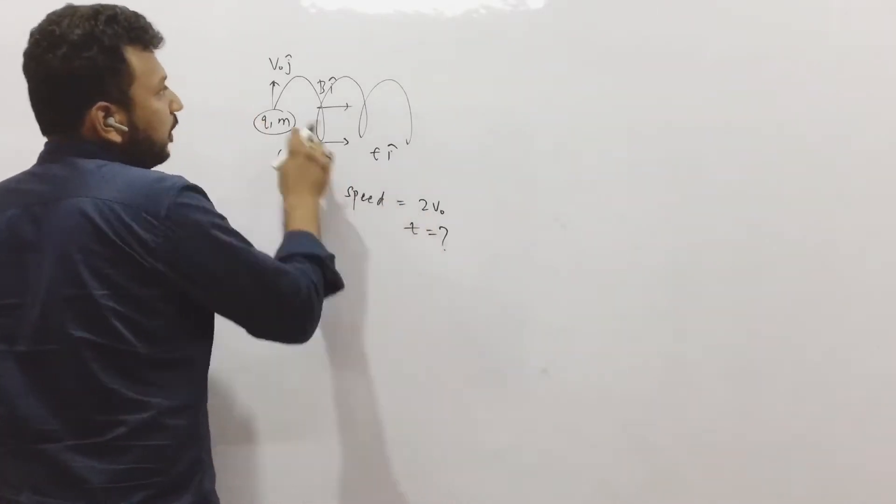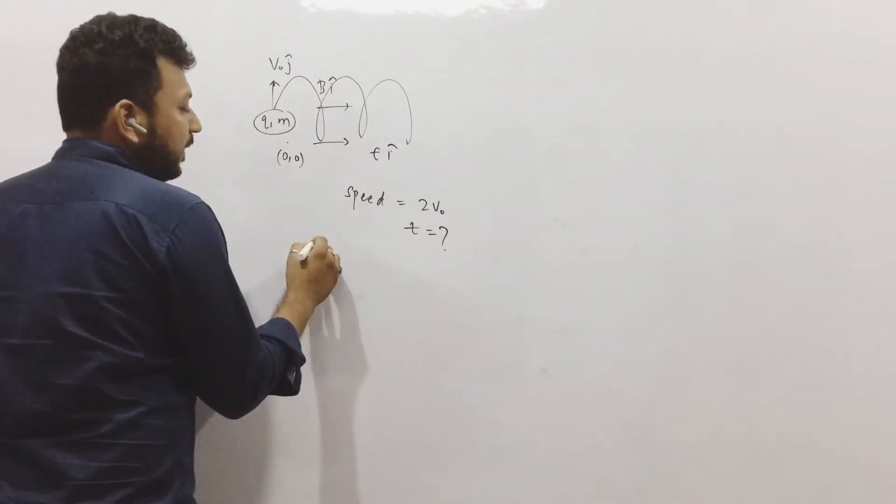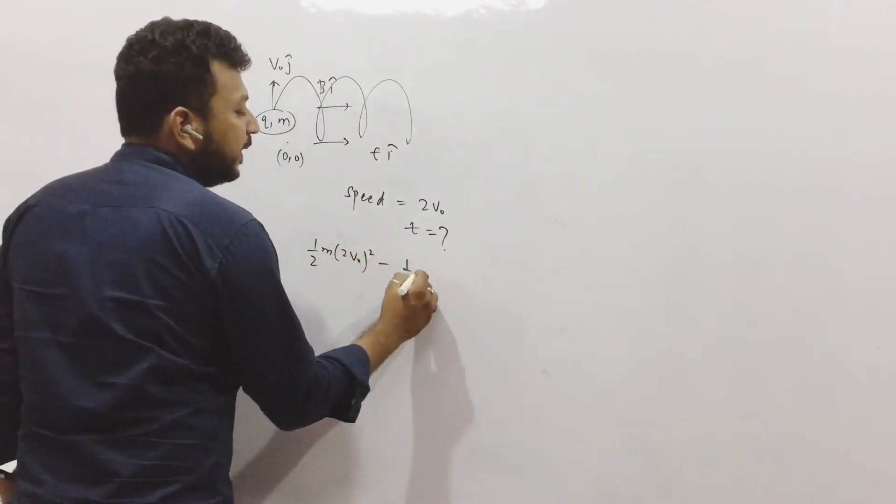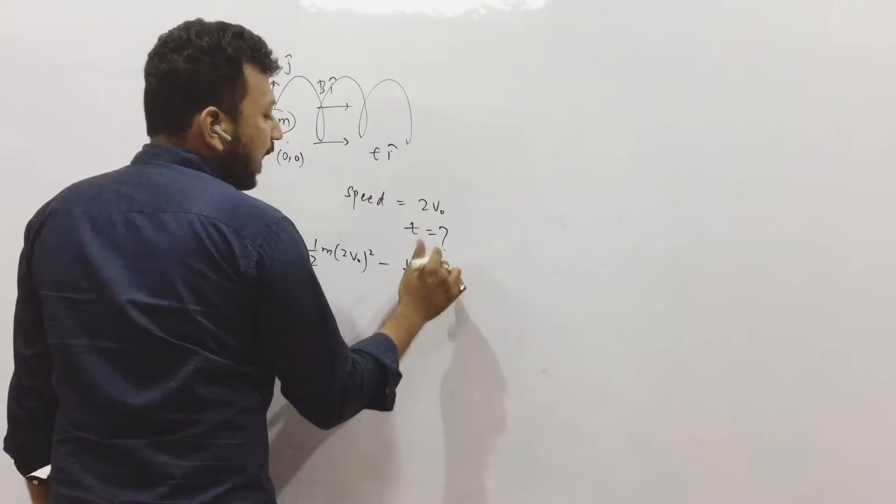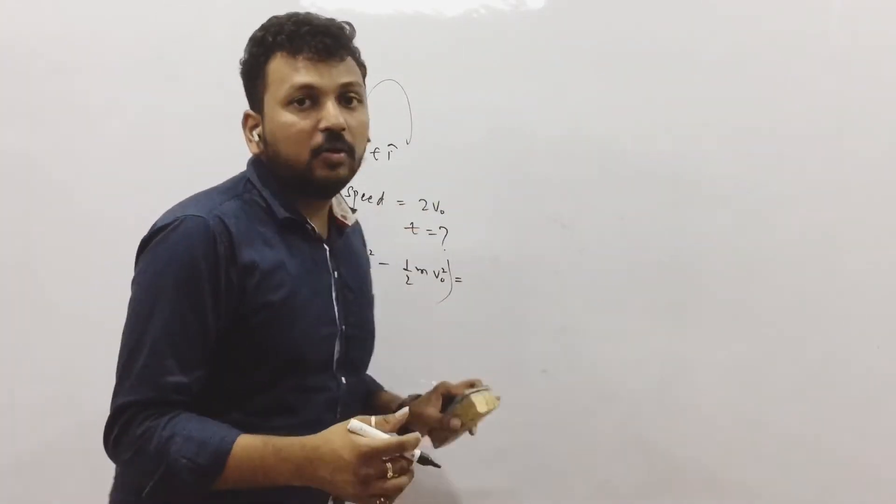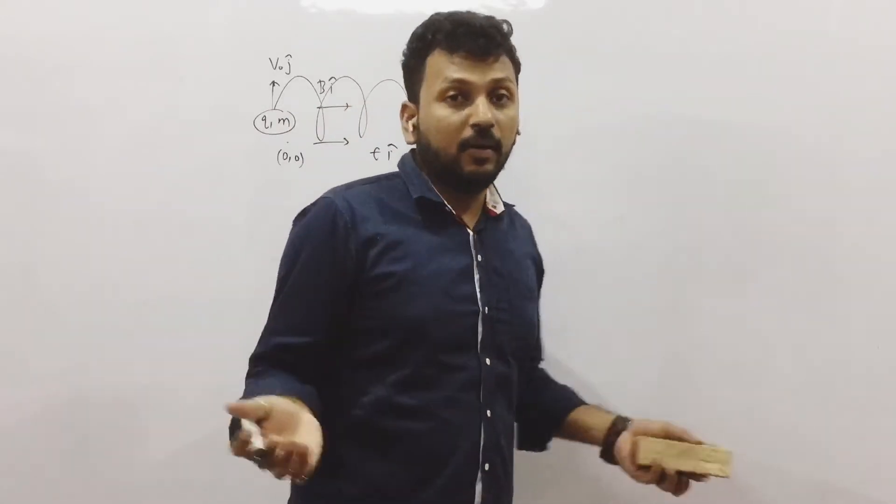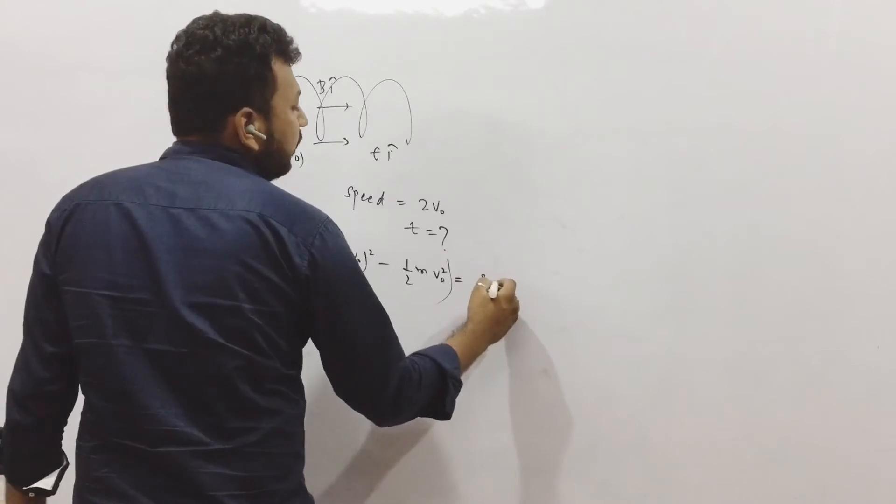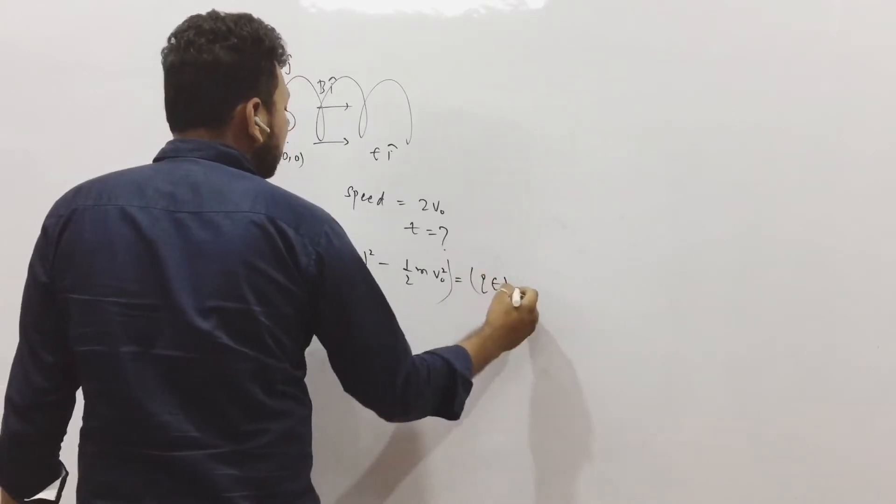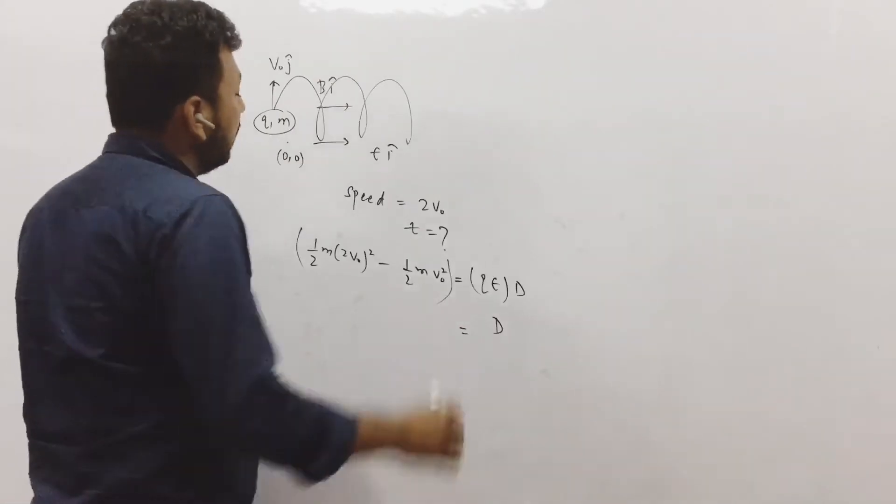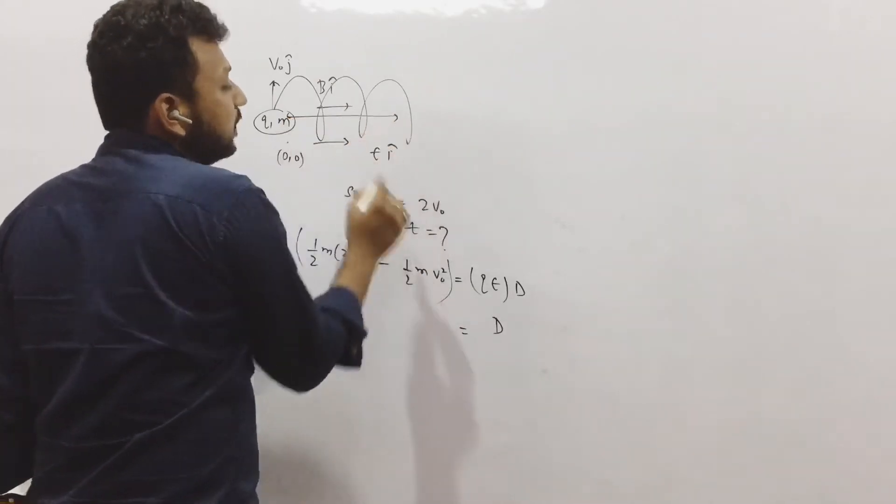See, till 2v0, from v0 the kinetic energy increases. How much? Half m v final squared minus half m v initial squared. That kinetic energy increase is done by only electric field because magnetic field doesn't do any work. So work by electric field is q into E force into distance. From here we can find the distance, after how much distance this will happen.